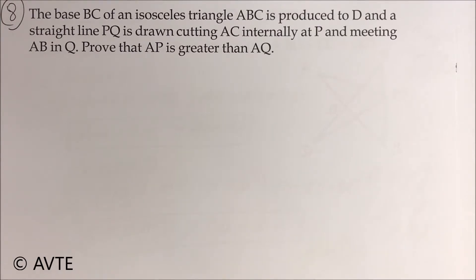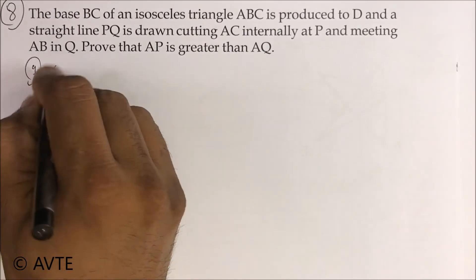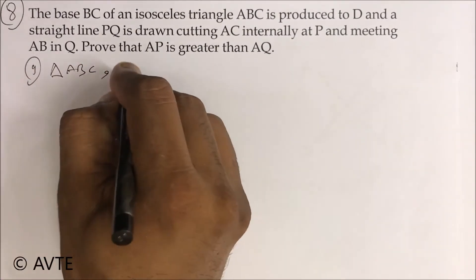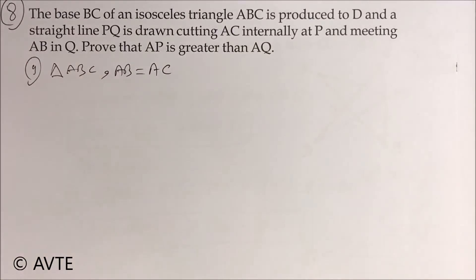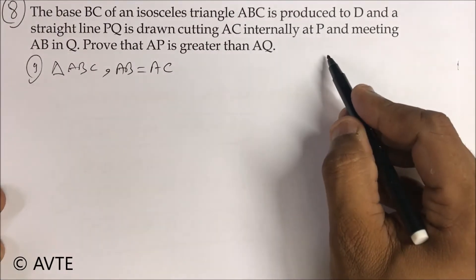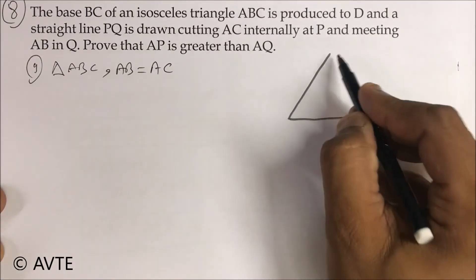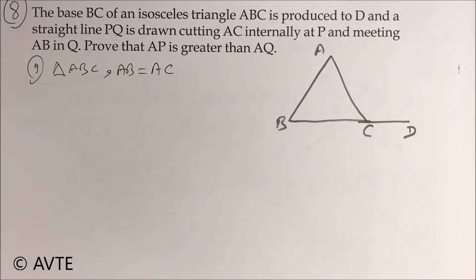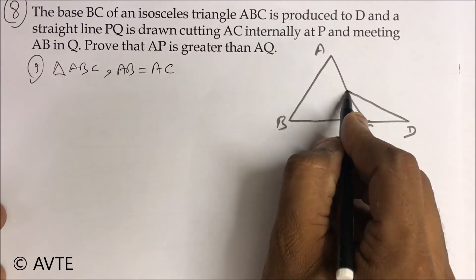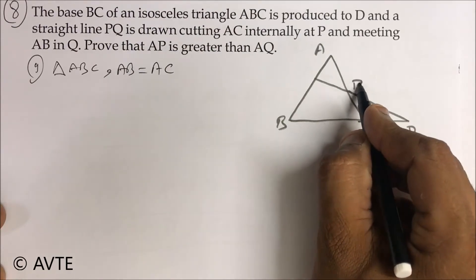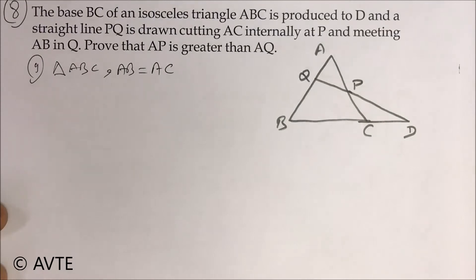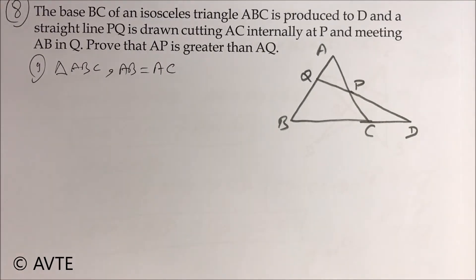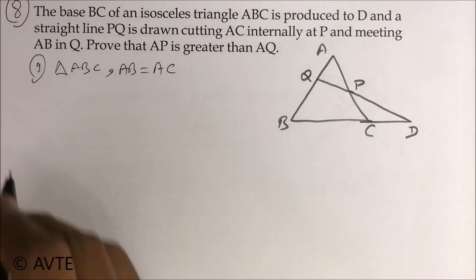So guys, this is the question: the base BC of an isosceles triangle — it means in triangle ABC, AB is equal to AC because BC is the base. We have made one figure. BC is produced to D and a straight line PQ is drawn intersecting AC at P and AB at Q, and you have to prove that AP is greater than AQ.